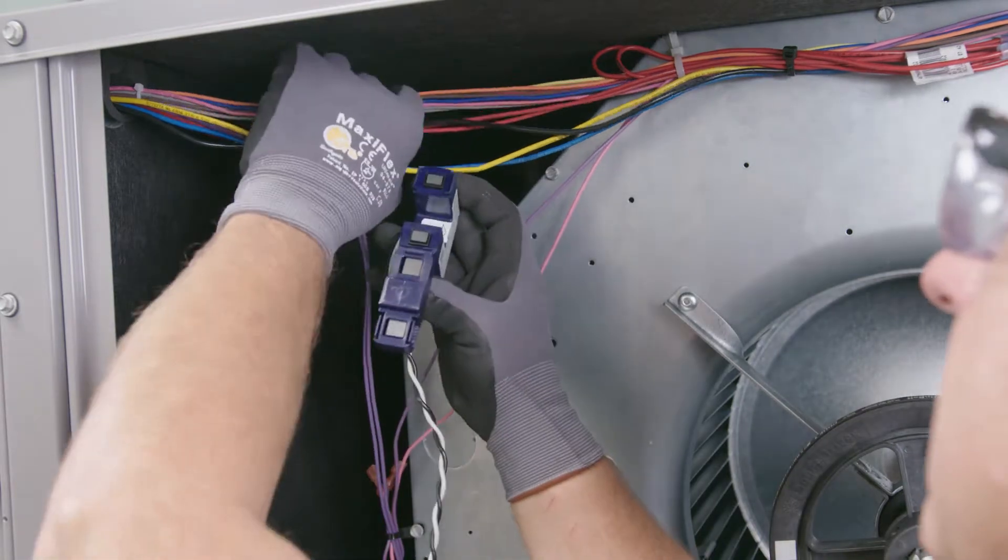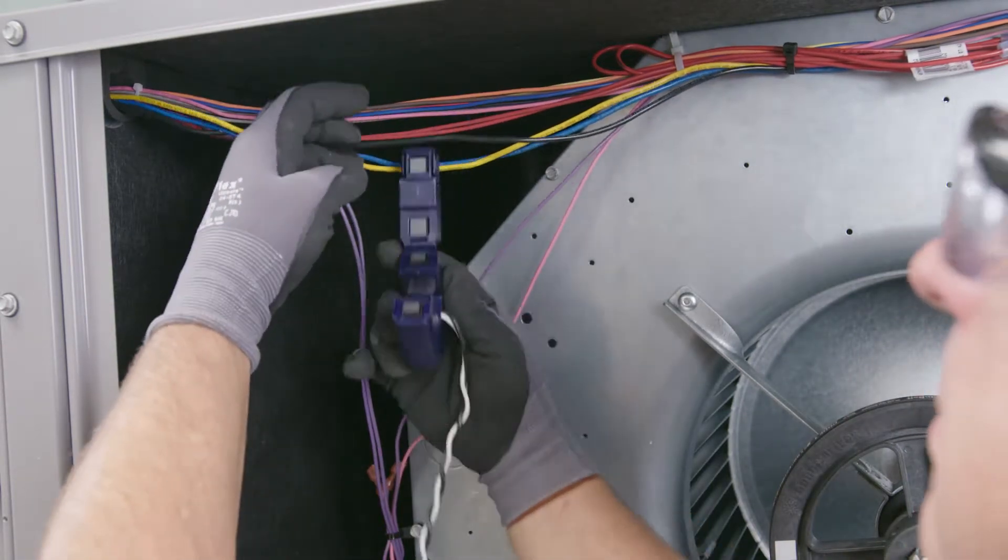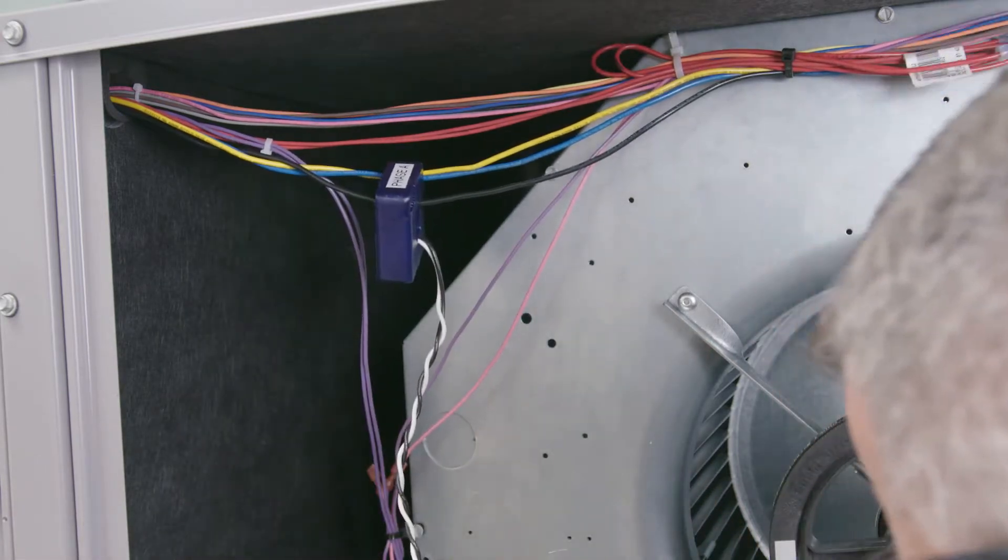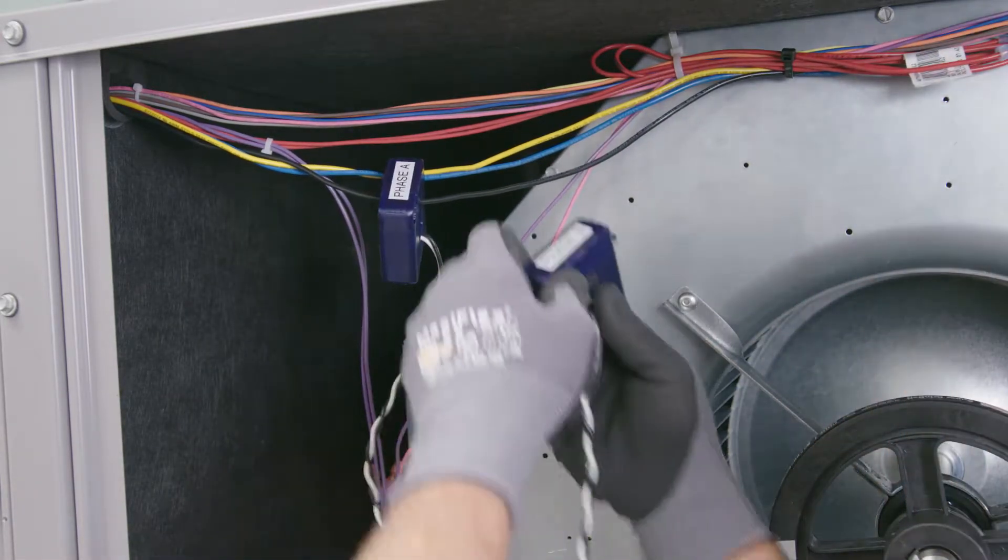Now that you've got line voltage connected to the power meter, you've got A, B, and C phase, which are black, yellow, and blue. These are the colors that the unit manufacturer uses to connect to the A, B, and C phase.